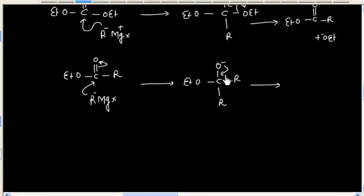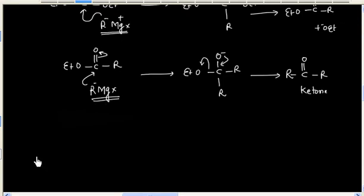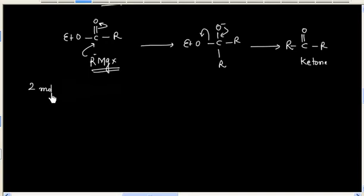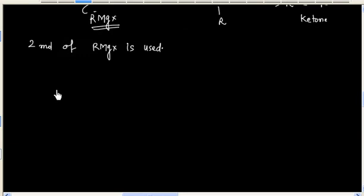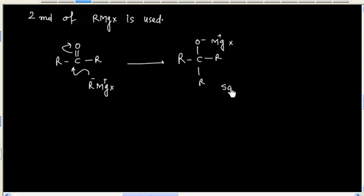And the next step is loss of a leaving group. So we have a ketone. So we have used 2 moles of Grignard reagent. Now ketone can further react with Grignard reagent, and finally we will have salt of alkoxide ion.